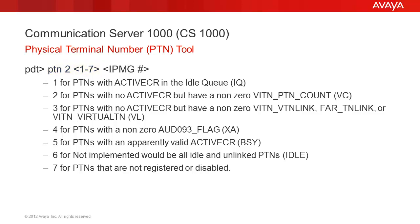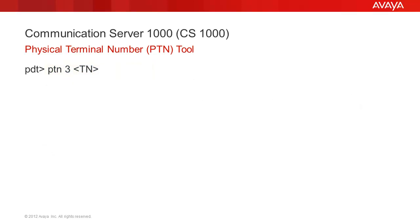To print all PTNs that match a particular PTN state within an IP media gateway number, enter PTN space 2 space a number between 1 and 7 representing the PTN state and the IP media gateway number. To print the links for a terminal number, enter PTN space 3 space the TN.